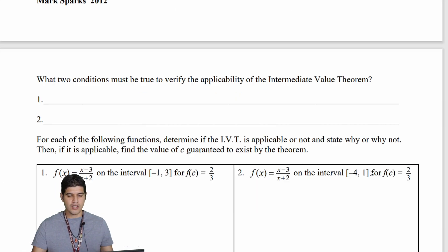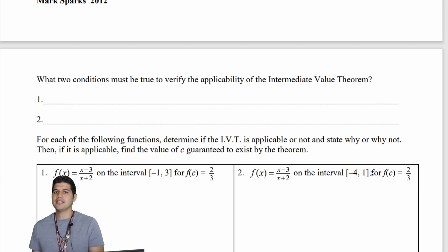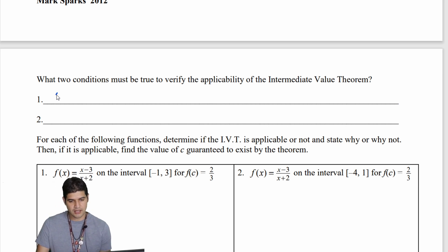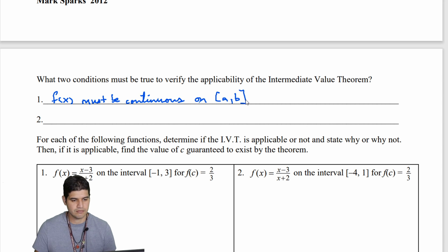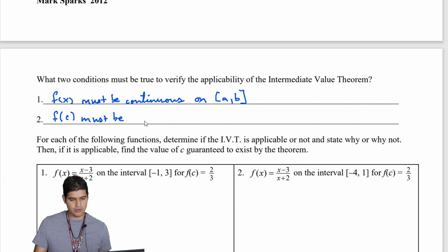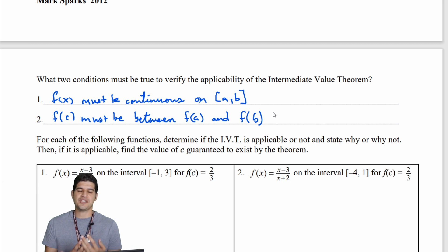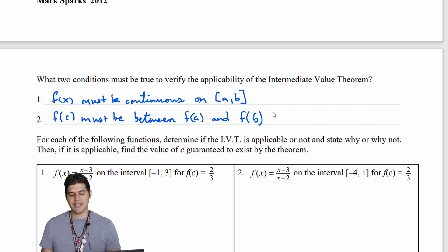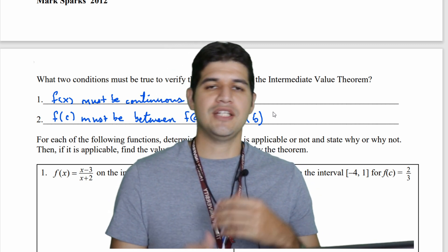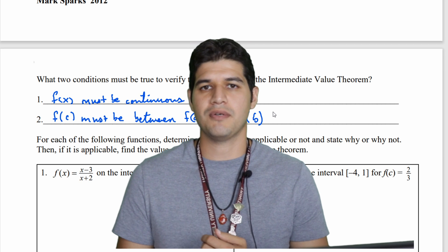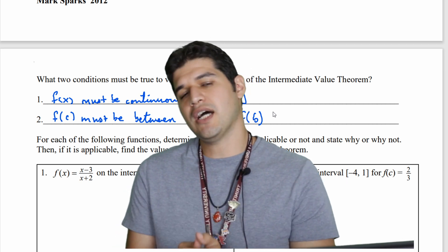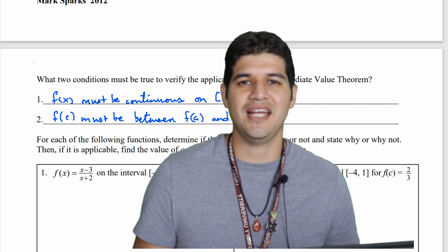To recap, two conditions must be true to apply the intermediate value theorem: first, f of x must be continuous on the interval from a to b; and second, f of c must be between f of a and f of b. We'll go into much more depth with practice problems in the next video, so please stay with us. If you need any help with this definition, reach out — I'm Mr. Hernandez and I'm always here to help.